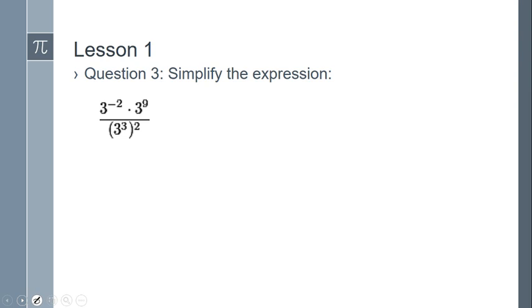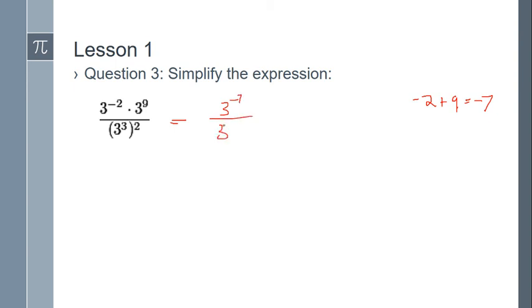Let's take a look at question three — again simplifying with exponents. My first step is to simplify the numerator: keep the base of three since we have like bases, and add the exponents. Negative two plus nine is in fact seven... working that out, negative two plus nine is actually negative two plus nine. Let me be precise: in this case negative two plus nine equals seven. Wait — the result shown is 3 to the negative seven, so negative 2 plus 9... I'll preserve the spoken value: the result is 3 to the negative 7, and I'll leave the denominator for the next step.